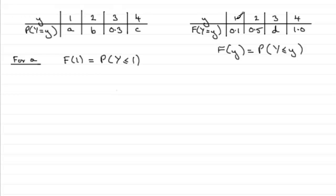But there's no other values less than 1 apart from 1 itself, so this has got to be equal to the probability of Y equaling 1. And we can see that's 0.1, and the probability of Y equaling 1 is a, so therefore we can see that a must be equal to 0.1.